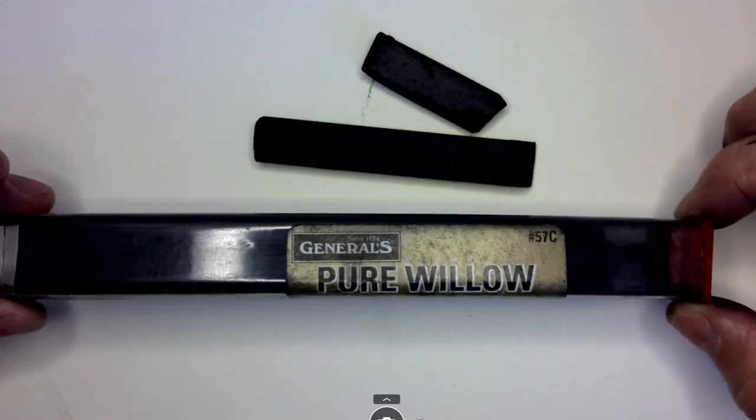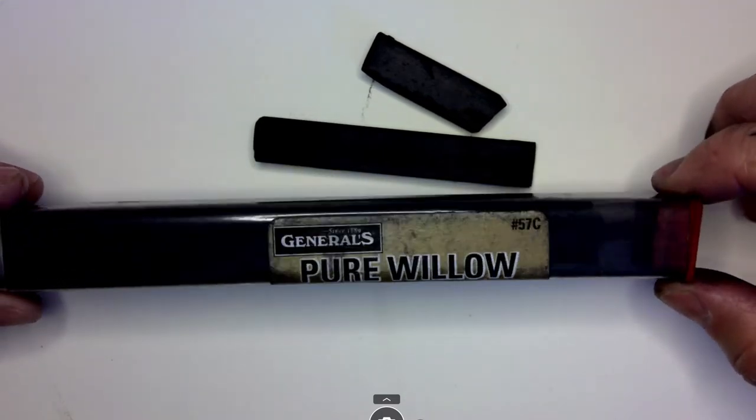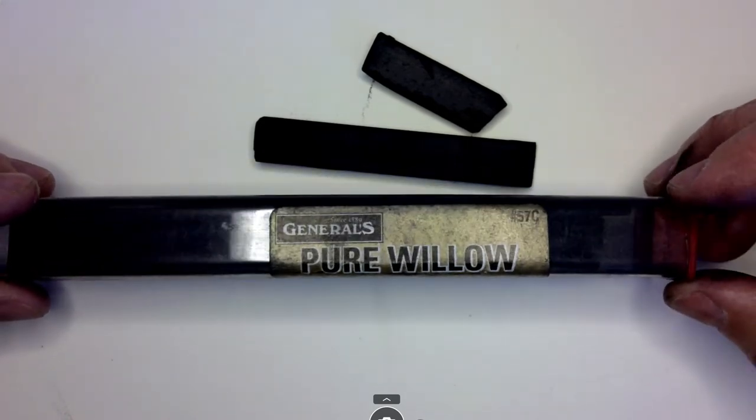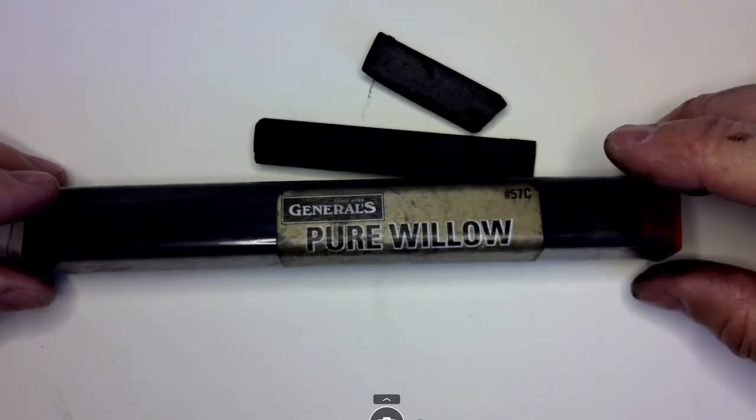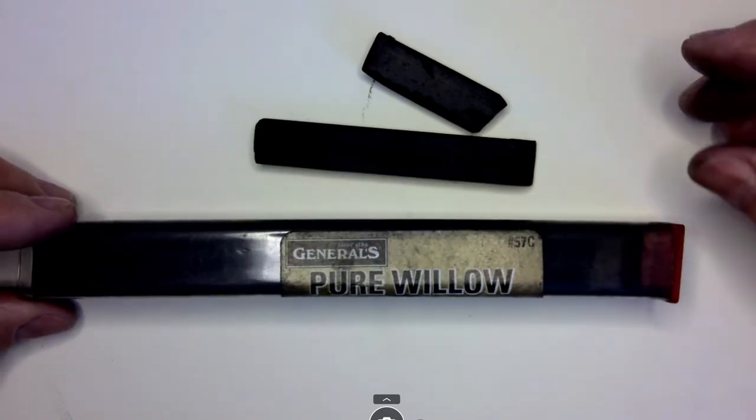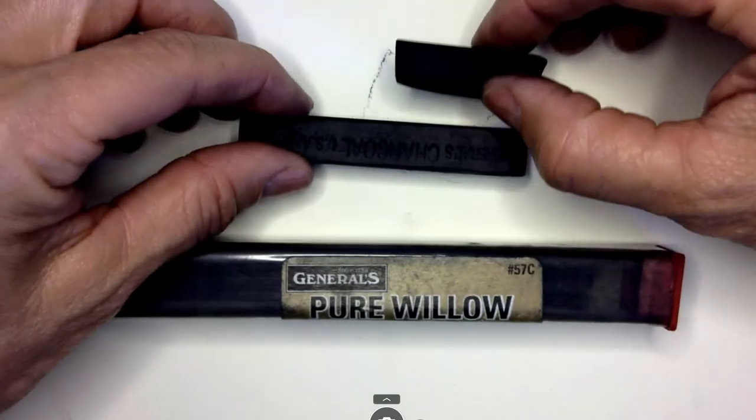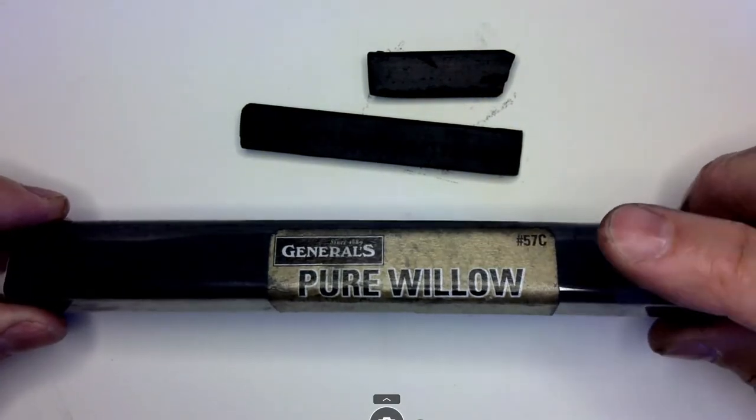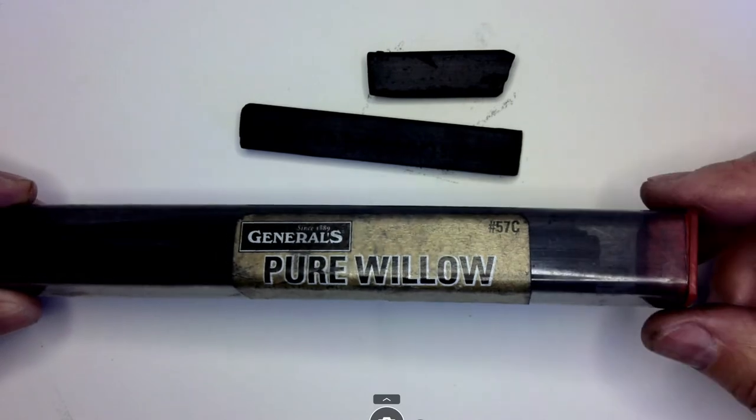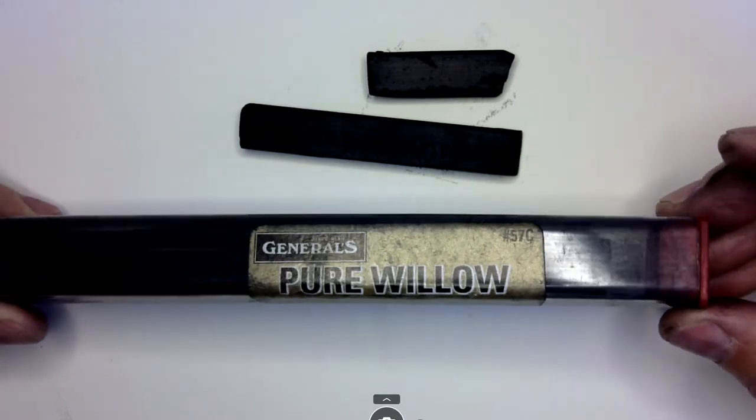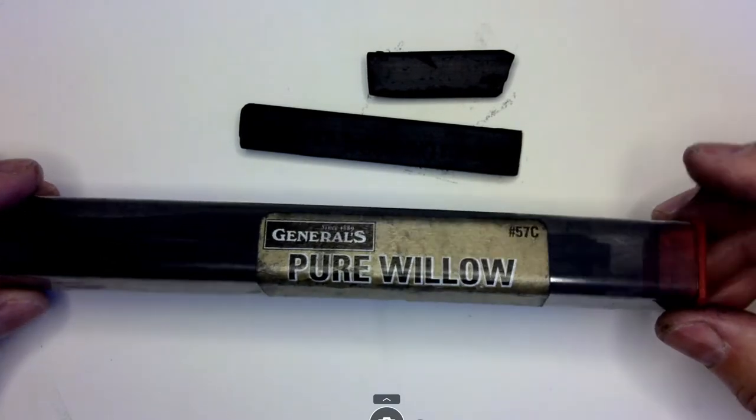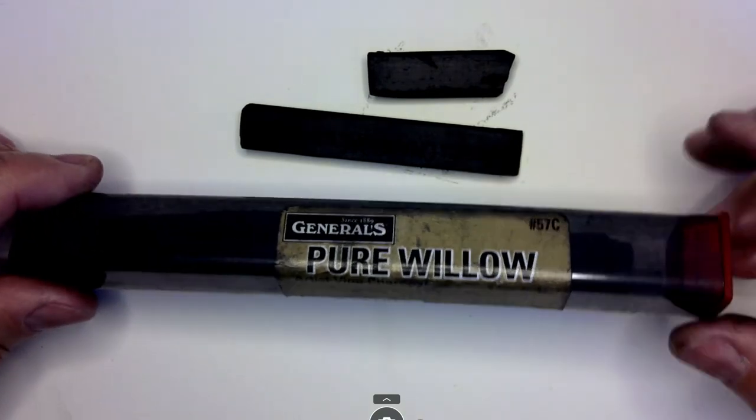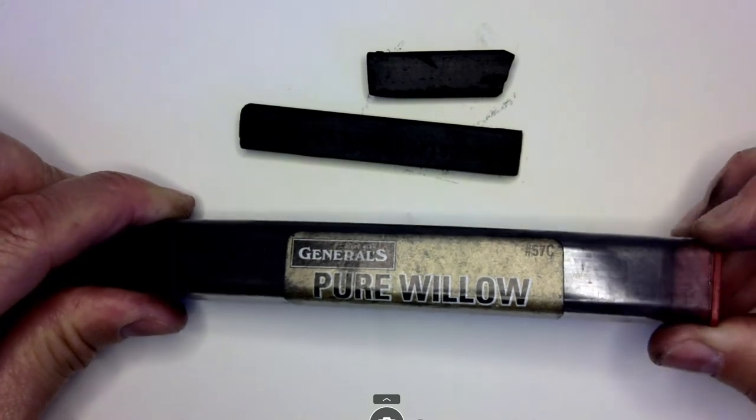There are quite a few different brands of willow or vine charcoal. Willow and vine charcoal are softer than compressed charcoal. I recommend getting General's brand Pure Willow with the red top because it's the most consistent charcoal with fewer knots.